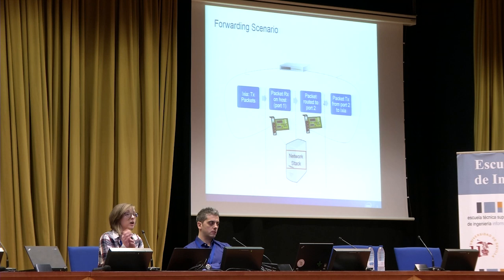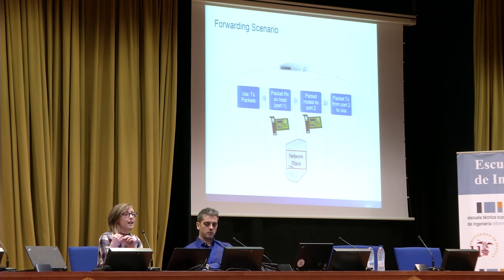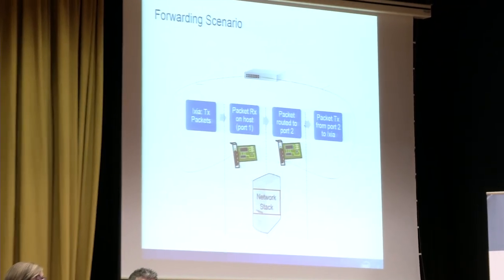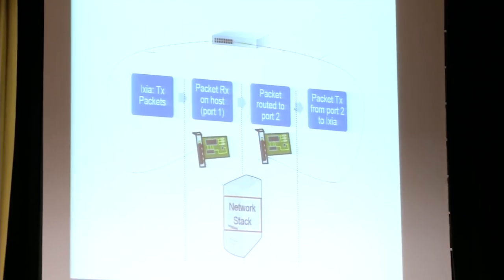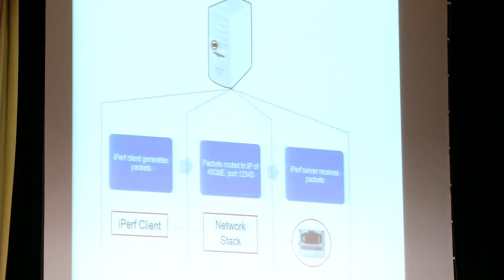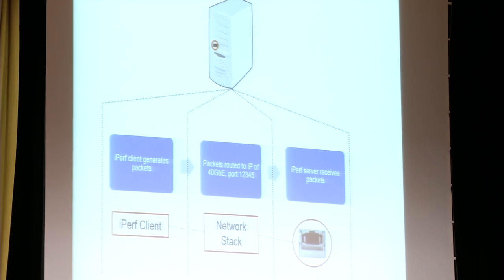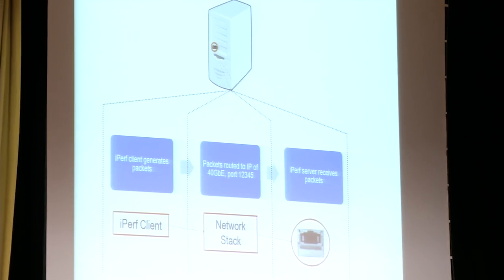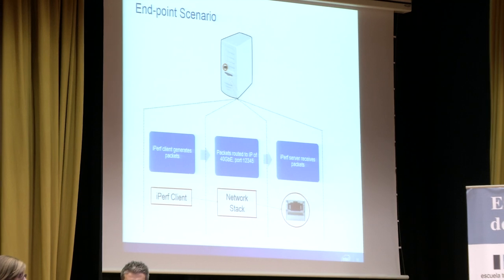We had two use cases. The first was to treat the platform as a network forwarding node, and the second was to treat it as a network endpoint. In the forwarding scenario, we used Ixia IxNetwork to forward traffic to a port on the platform, which was then routed to another port on a different subnet and sent back to Ixia where throughput and latency were calculated. In the endpoint scenario, an Iperf client ran on the platform sending packets to a 40 GB port with Iperf server bound to that port.